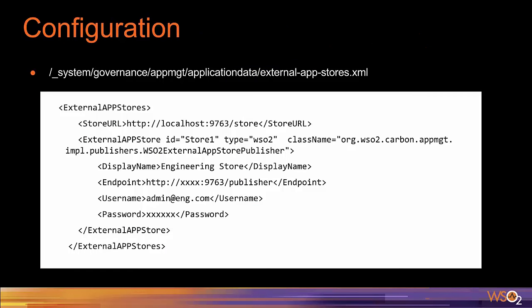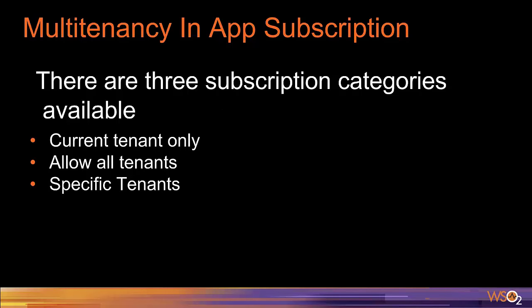To configure external stores, login to the carbon console as a tenant admin and browse to open the external app store configuration, then add the required configuration. The Store URL represents the URL of the store where the app is actually published. Each external store entry has an ID attribute that must be unique. Display name is used in the publisher to list external stores. Username and password are the credentials of a user who has permission to create and publish web apps in that particular tenant store. With the tenant store feature, any user from any tenant can browse other tenants and access web applications. To control web app access by tenant users, we have introduced the subscription availability feature.